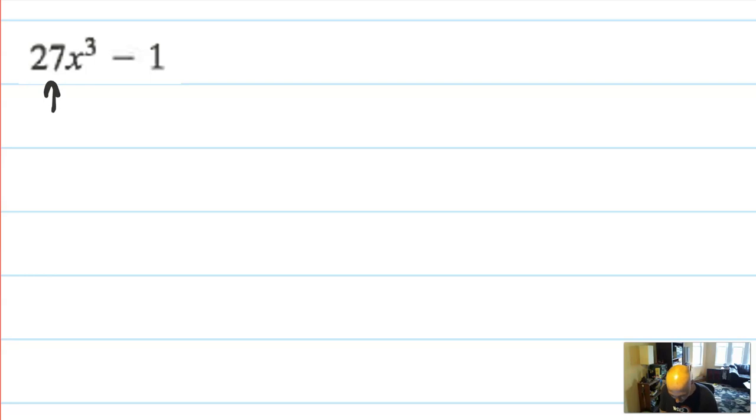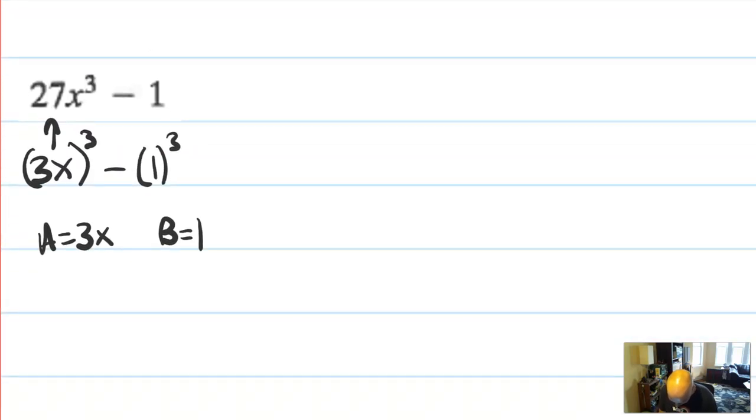So let's identify. Is this of the form a³ minus b³? Yes, it is. This is 3x cubed minus 1 cubed. 1 is a perfect cube. So 3x is a, and 1 is b. So the pattern is going to be, and I like to write, you know, I don't do this every day, so I do like to write the pattern above. It's going to be a², a, b, b². It's going to be a, same sign, opposite sign, always positive. Same, opposite, always positive.